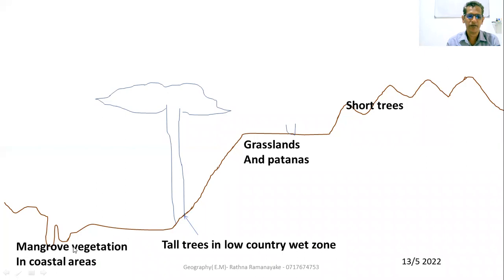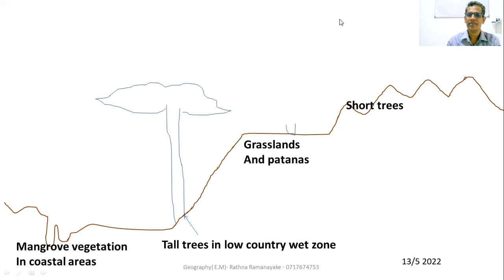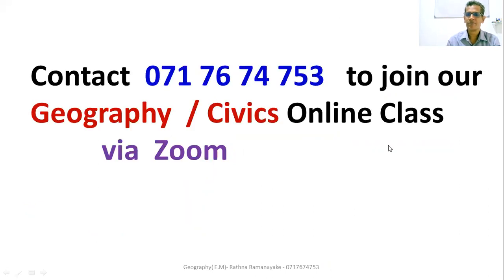You can see mangrove vegetation in coastal regions, tall trees in the low country wet zone, and grasslands and patanas in hilly areas near plateaus. That is the end of our lesson. I hope to present another video like this.